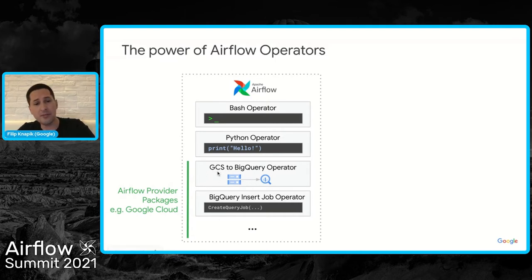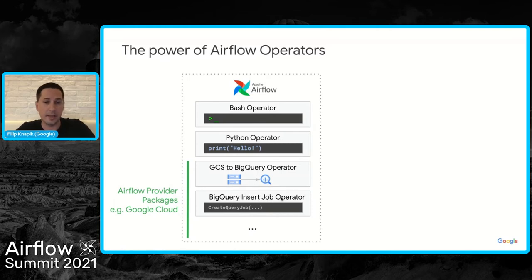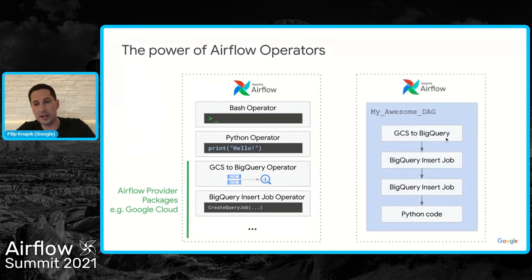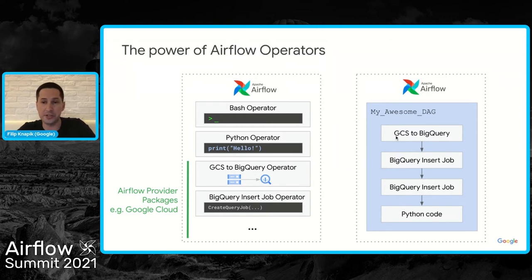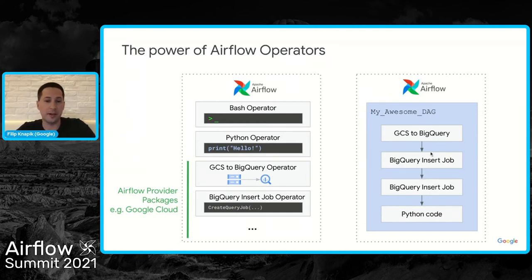You also have provider packages for multiple different providers. For instance, copying a file from GCS, loading it to BigQuery, or starting a BigQuery job is made very simple with those operators. Creation of a DAG becomes like stitching together multiple operators that execute your business logic — for example, a DAG doing GCS to BigQuery copy, starting a BigQuery job, another BigQuery job, maybe some Python code, and sensors to start with.